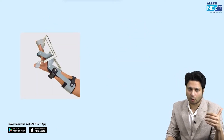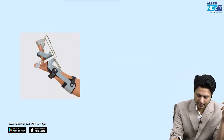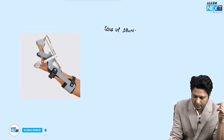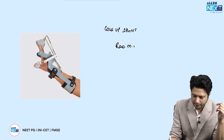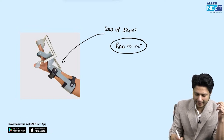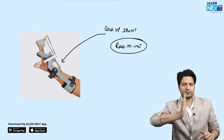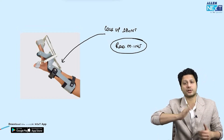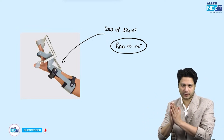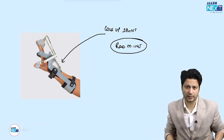Another very commonly asked splint is the cock-up splint, used in the management of radial nerve injury. You identify the cock-up splint when the wrist is kept in extension — any splint holding the wrist in extension is termed the cock-up splint.